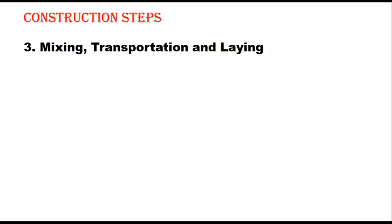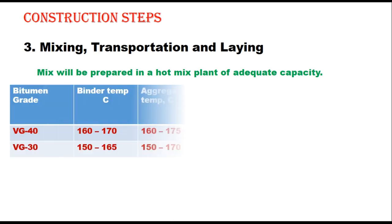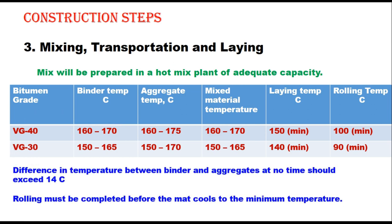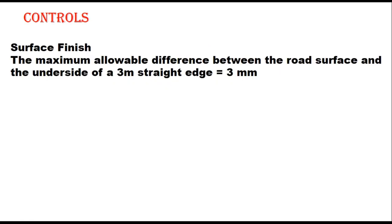The next step is mixing, transportation and laying. Mix will be prepared in a hot mix plant of adequate capacity. MORTH specifications give guidelines for binder temperature, aggregate temperature, mix temperature, laying temperature and rolling temperature depending upon the grade of bitumen. The difference in temperature between binder and aggregate should at no time exceed 14 degrees centigrade, and rolling must be completed before the mat cools to the minimum temperature. Surface finish: the maximum allowable difference between the road surface and the underside of a 3-metre straightedge should be 3 mm or less.